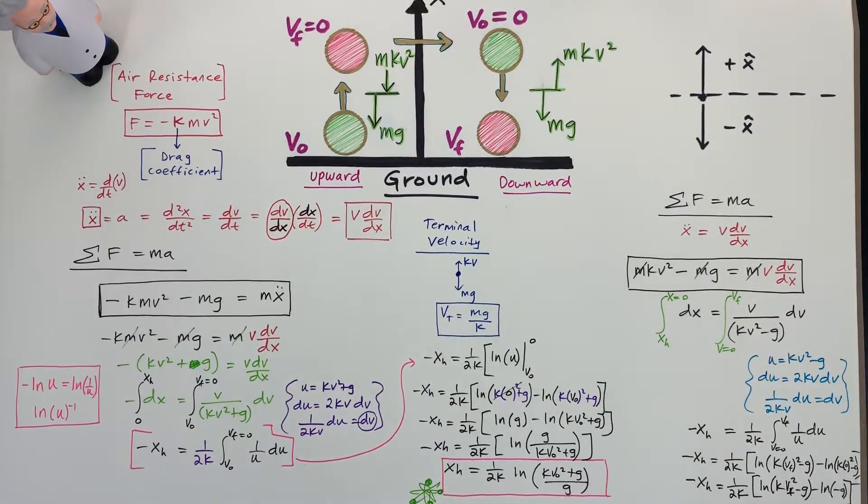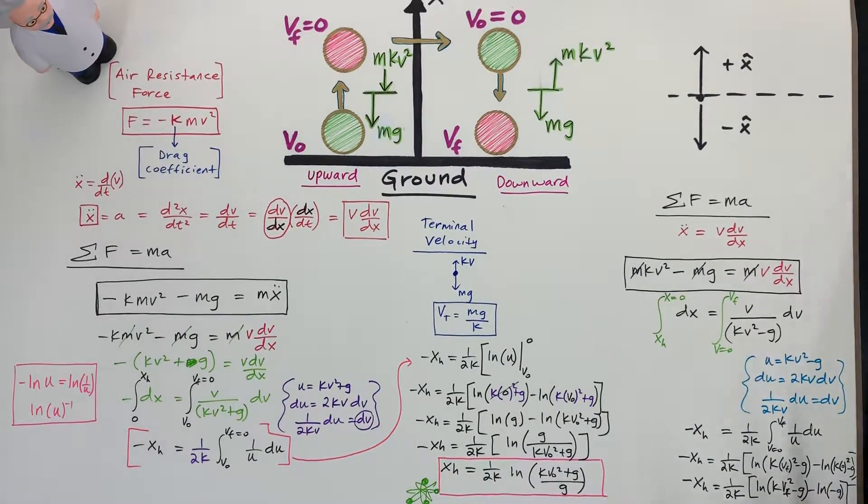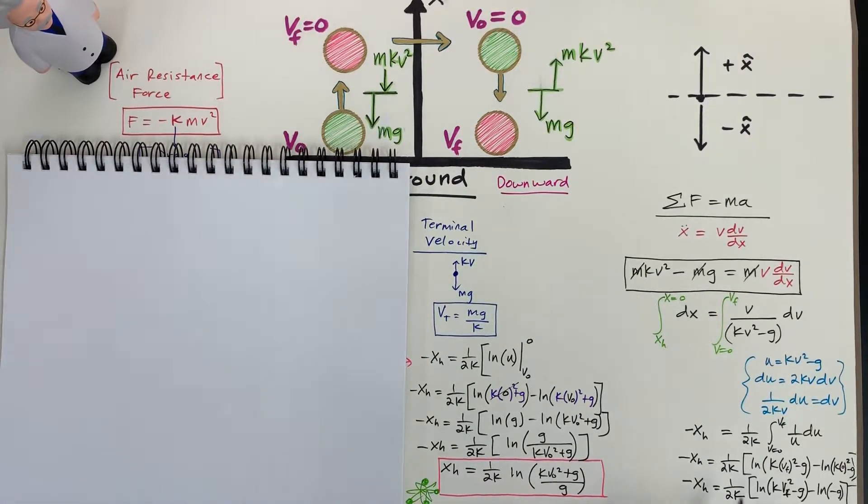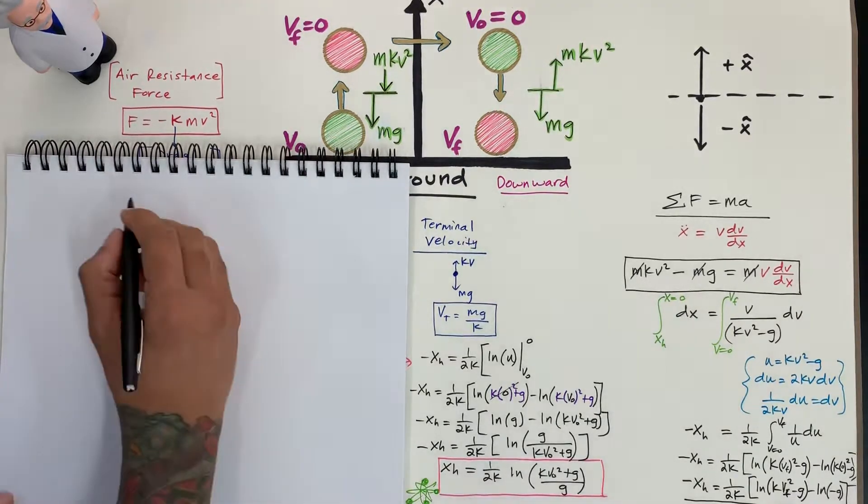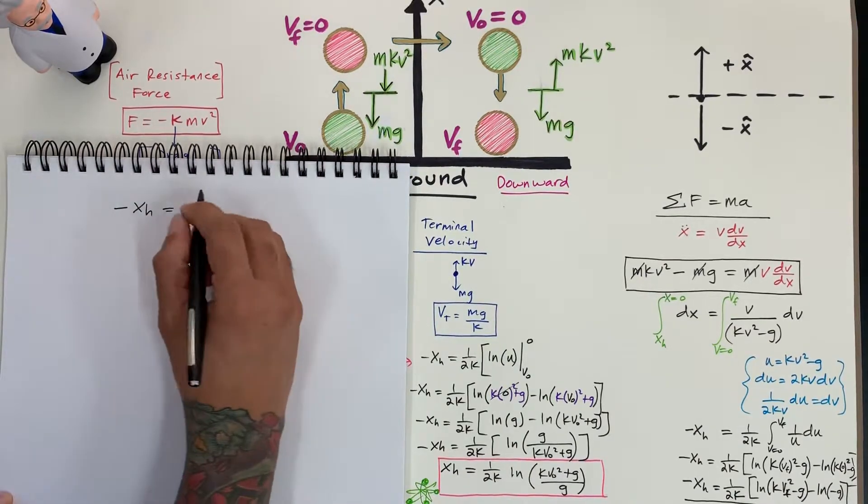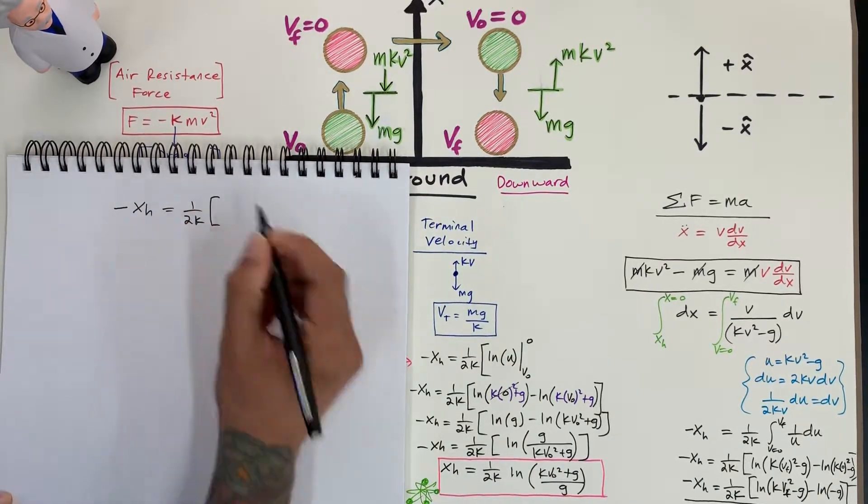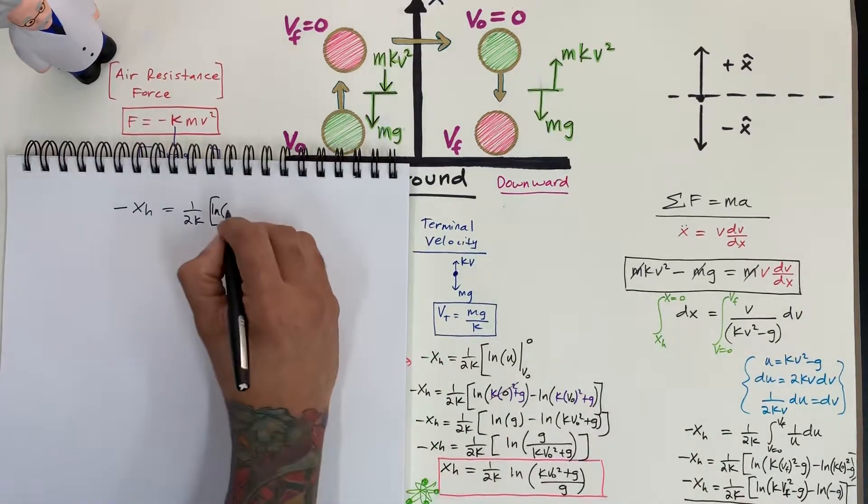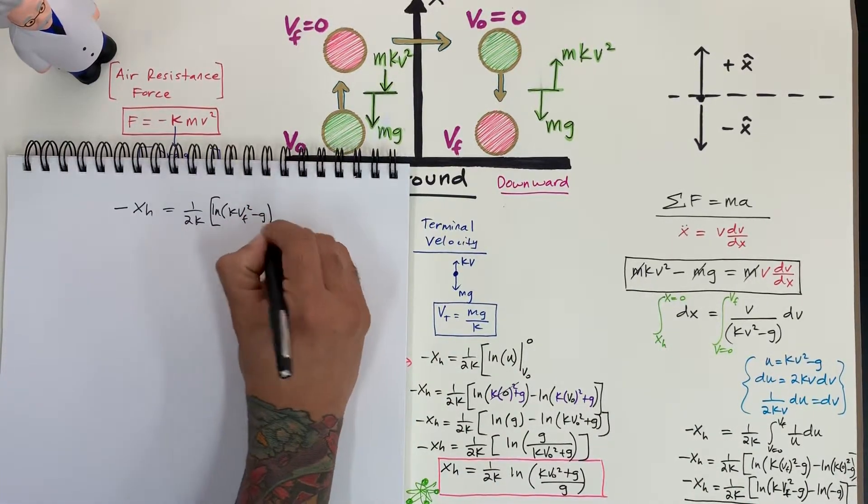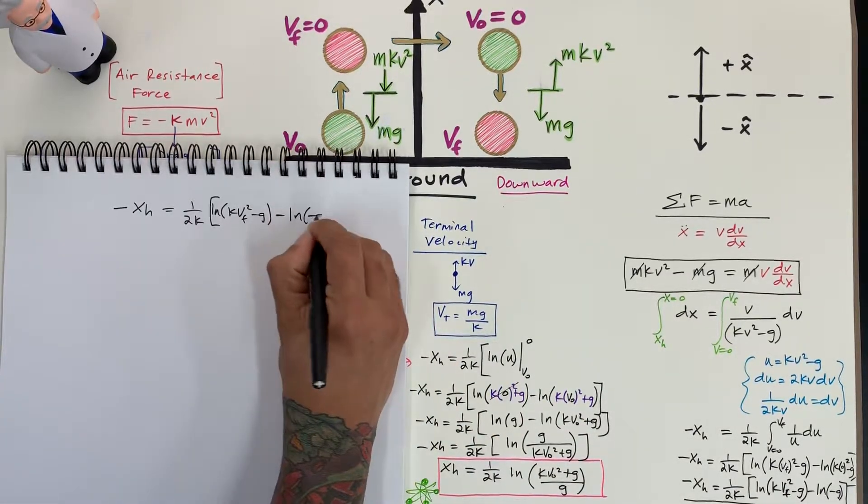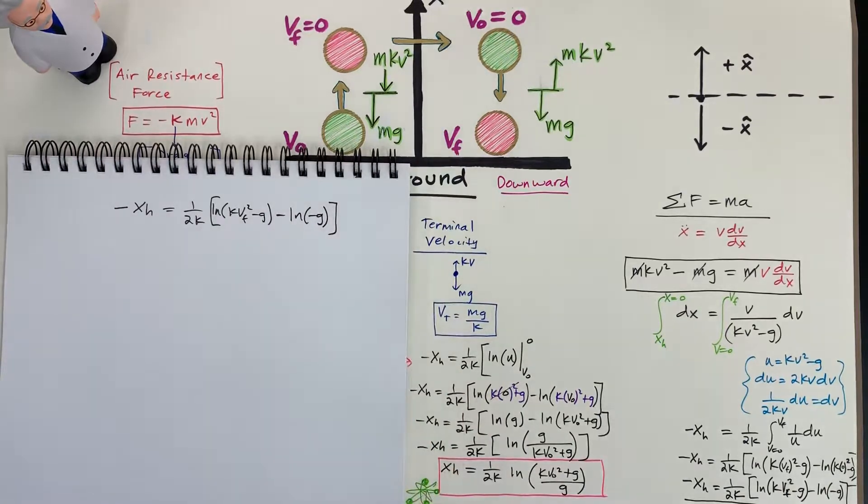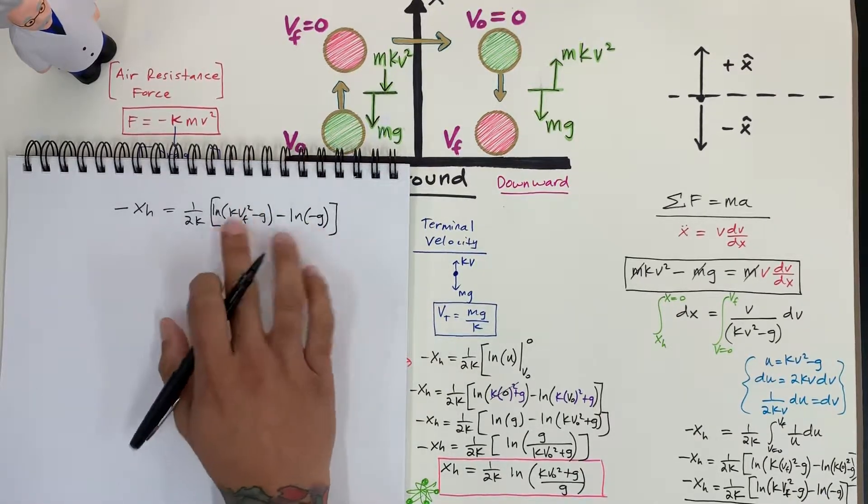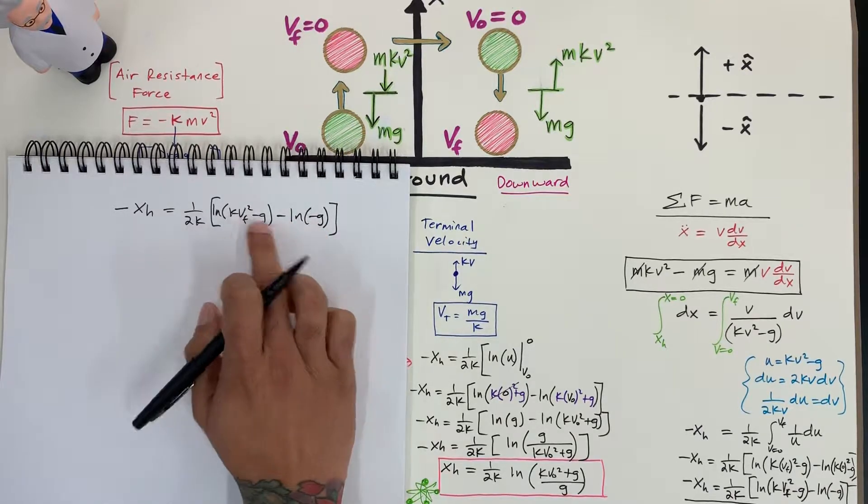That's kind of tight right there. I'm going to start writing the rest of it here. Let's focus our attention on this side. I'm going to pick up right where I left off, which is here. I have negative x_h, which is equal to 1 over 2 k. In brackets, I have ln of k v final squared minus g. That's in parentheses. And then minus ln of negative g. I'm going to finish this off. Final minus initial. So the properties of ln, I'm going to put this one on the bottom because it's the initial, final minus initial.